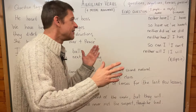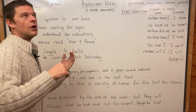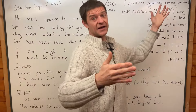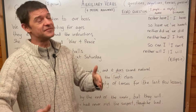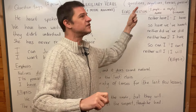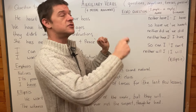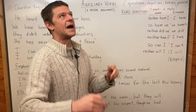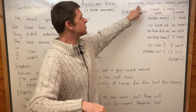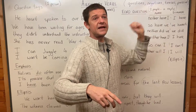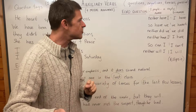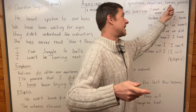Auxiliary verbs like have, has, am, is, are — we use them in tenses, as you've seen in the last few classes. We also use them in questions: 'Do you have a brother?' — 'do' is an auxiliary verb. 'Has she got a sister?' — 'has' is an auxiliary verb. And in negatives: 'He didn't go to the beach' — 'didn't' is an auxiliary verb.